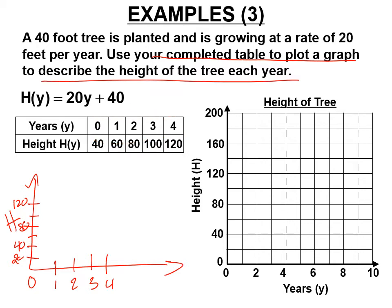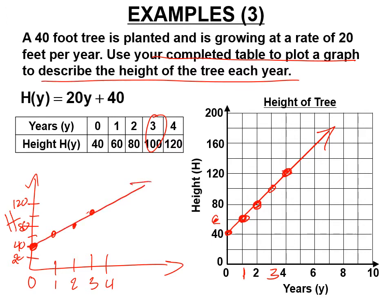Let's graph those points. This tree is growing continuously — it's a continuous function, not just a bunch of points. So we draw a line through the points with an arrow at one end to show the tree keeps growing. That's what a real-world graph of a linear function looks like, written in function notation.